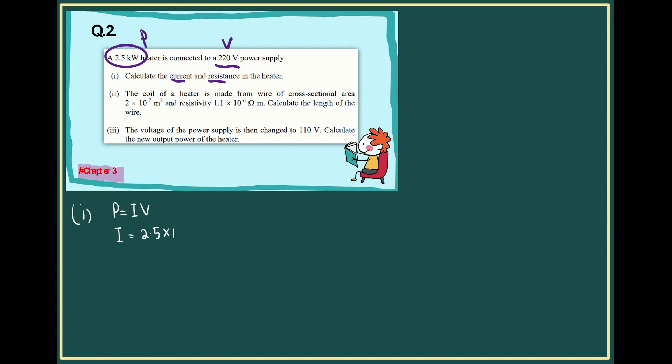.5 kilo times 10 to the 3, divided by V is 220. Then your current is supposed to be 11.36 ampere.